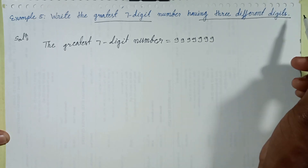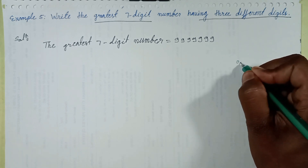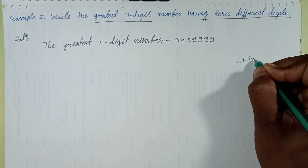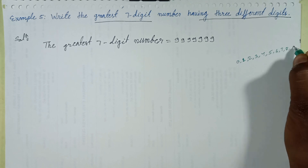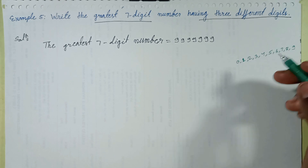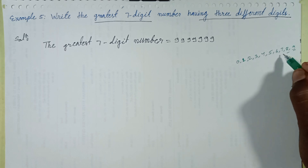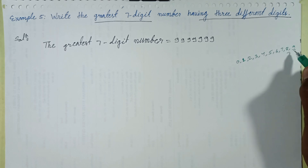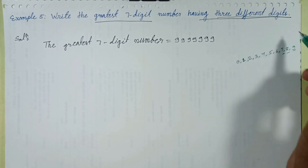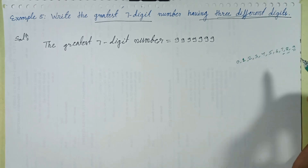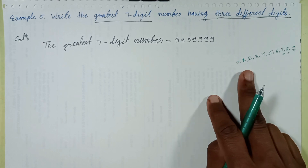There are total ten digits: zero, one, two, three, four, five, six, seven, eight, and nine. The greatest value is nine. We find three different digits in decreasing order — not increasing — only decreasing. So the three greatest digits are nine, eight, and seven.